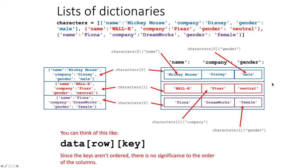But in this case, the table columns are not identified by their position or their index number, but rather they're identified by the key of the dictionary. And you'll notice each of the dictionaries has the same keys in it. They all have name, company, and gender.